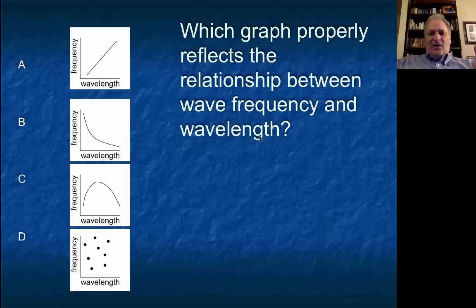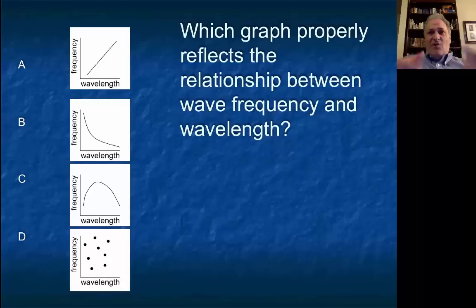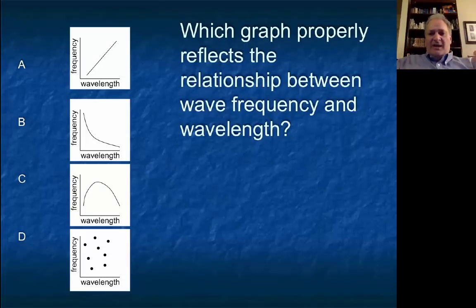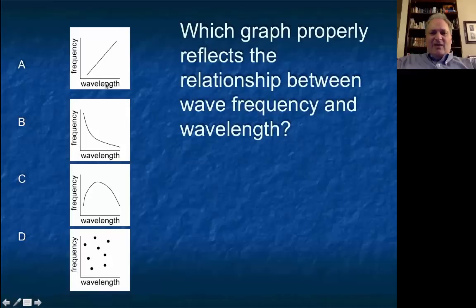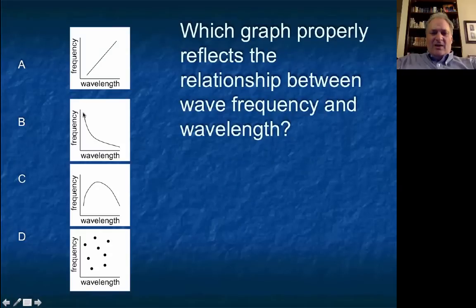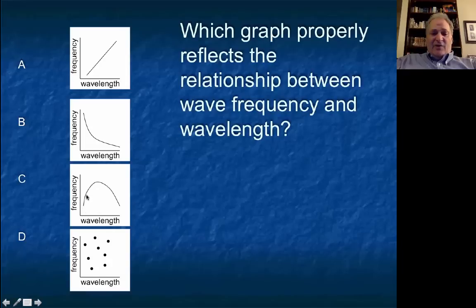Frequency and wavelength are inversely proportional to each other: if frequency gets large, wavelength should get small. Graph A shows them both increasing together — that's wrong. Graph B shows that when frequency is large, wavelength is small, and as wavelength gets longer, frequency goes down — that's the correct inverse relationship. Graph C shows frequency increasing with wavelength then dropping back, and D shows no clear relationship. The right answer is B.